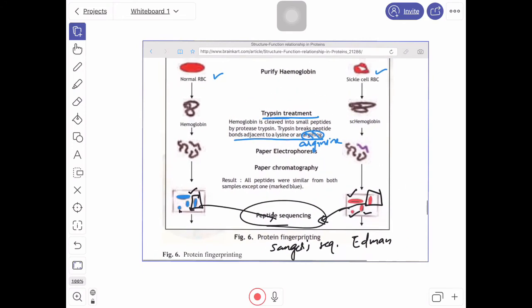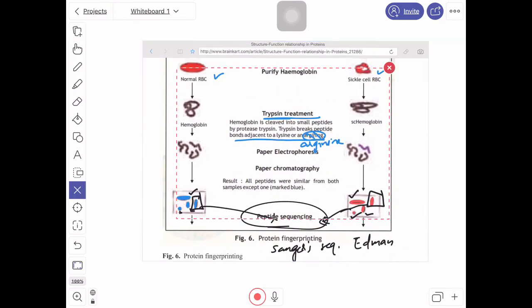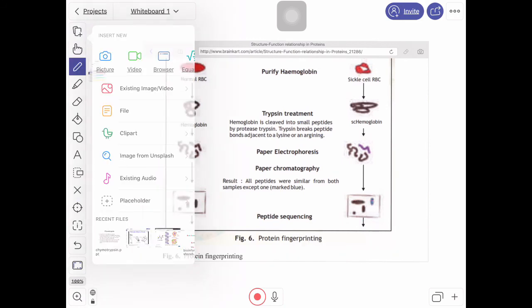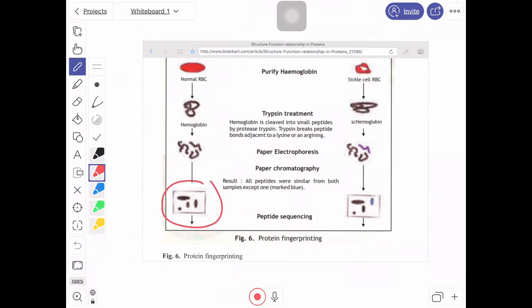If you do this for sickle cell, if you do this for normal RBC, this pattern is unique to normal RBC and this pattern is unique to sickle cell. So we can consider it as a fingerprint. That's why it's also known as protein fingerprinting. Thank you.